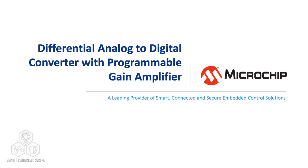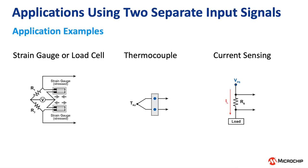PGAs are often used with differential ADCs, where the differential ADC simply measures the difference between two separate input signals. Differential ADCs are great for applications such as load cells, strain gauges, thermocouples, current sensors, or pretty much any other sensor that has two output signals.